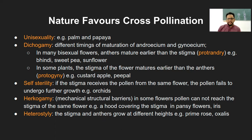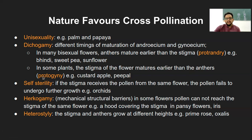The second situation of dichogamy is protogyny — in some plants the stigma matures earlier than the anther. 'Proto-' refers to earlier, and 'gyny' refers to gynoecium. So it is the earlier maturation of the gynoecium compared to the anther. Common examples are custard apple and a few others.